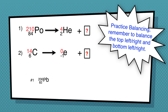Let's take a look at the answers. For the very first one, we're going to have lead-206. Notice that 206 plus 4 gives you 210 for the top. On the bottom, 82 plus 2 gives you 84.